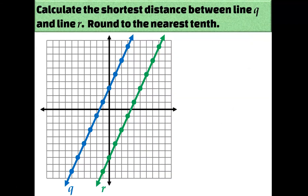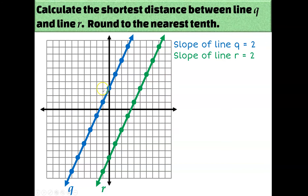Here are two lines, and they're parallel. I can tell they're parallel because they both have a slope of 2 — for both lines you go up two, right one, repeatedly. A line that would be perpendicular to these two lines would have a slope of negative one half.